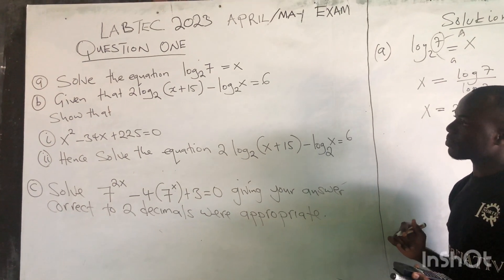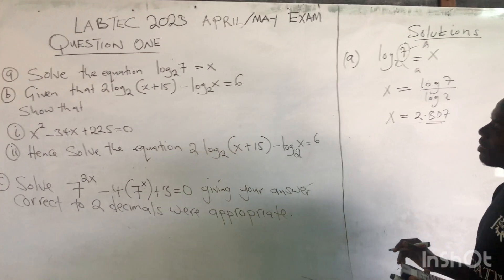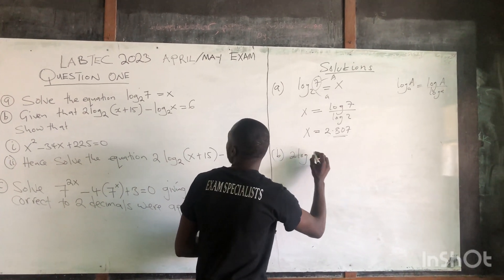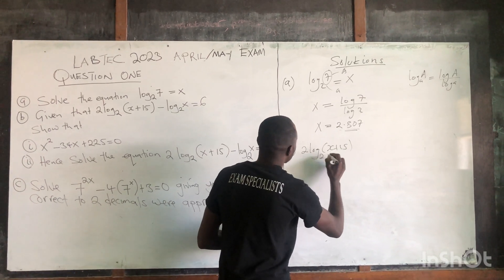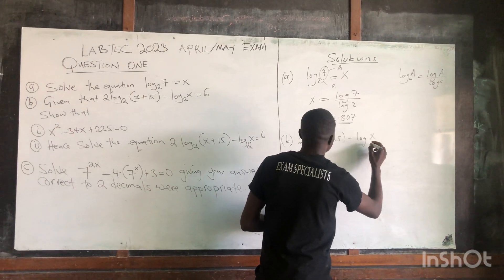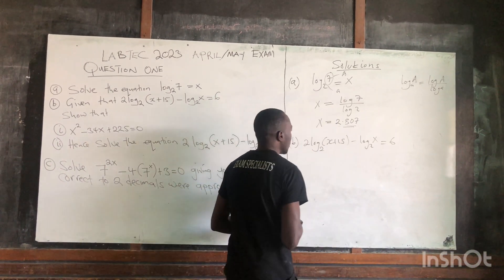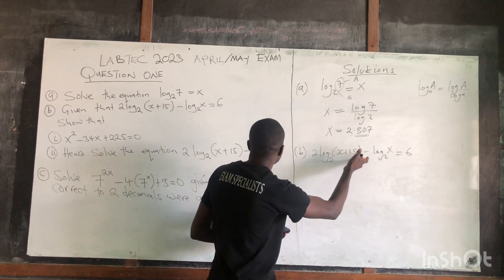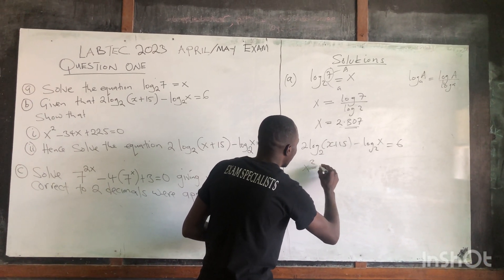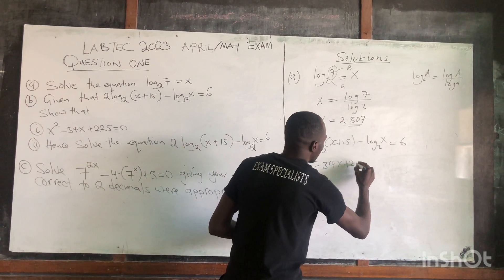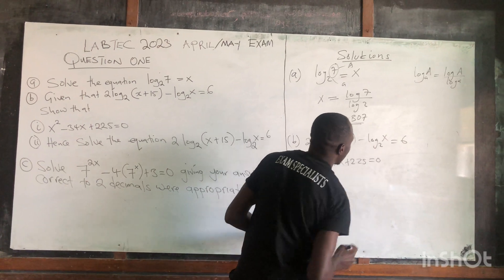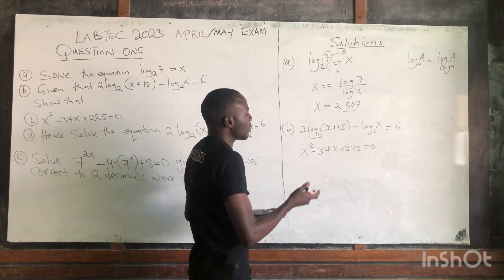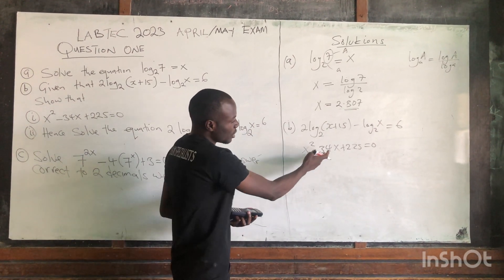We are going to question 1B. We are given that 2 log(x + 15) to the base of 2 minus log x to the base of 2 is equal to 6. We are going to show that this expression is the same as x squared minus 24x plus 225 equals 0 — that is, we want to express this logarithm expression in a quadratic form.